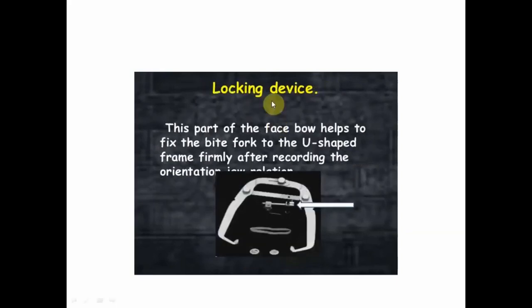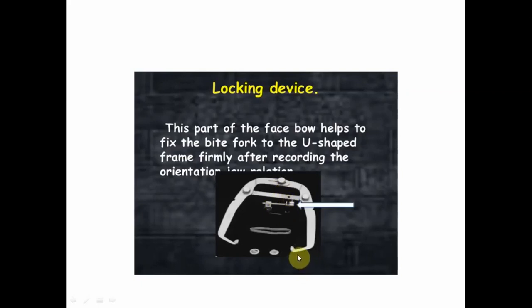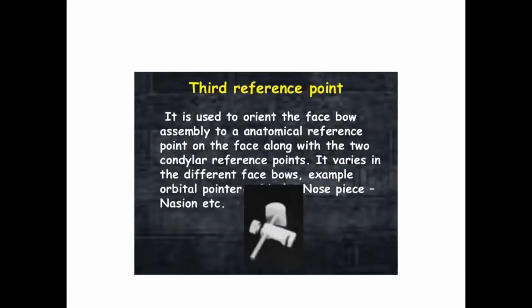This is the locking device. This part of the facebow fixes the bite fork to the U-shaped frame firmly according to the orientation relation. There are three locking devices in the earpiece type of facebow: one is to lock the bite fork to the U-shaped frame, another locking device is for locking the condylar rods, and another one is for locking the auditory pin.